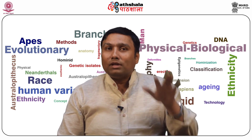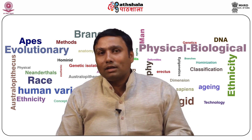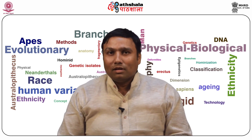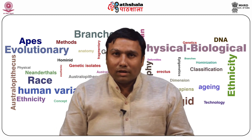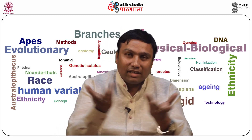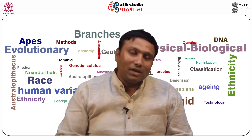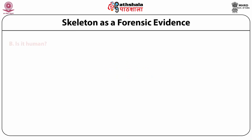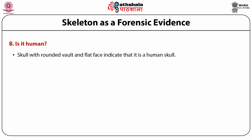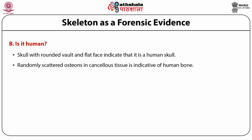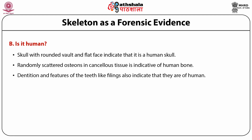To determine whether the recovered material is a bone or not, the presence of cortex or outer layer and the cancellous spongy interior tissue differentiates bone from other material. To determine if it is human, a skull with rounded wall and flat face indicates a human skull. Randomly scattered osteons in cancellous tissue, dentition features like fillings or caps, and precipitation tests are also used for identifying the species.